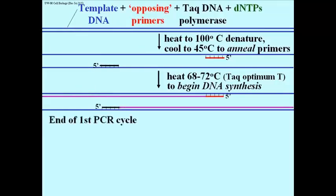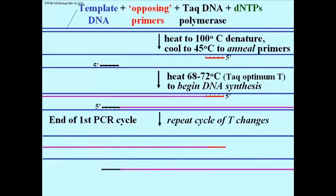We repeat the cycle of temperature changes, which denatures the DNA at 100 degrees. At 45 degrees, the primers now form hydrogen bonds with their complements, but now it's happening not on two strands, but on four strands of DNA.